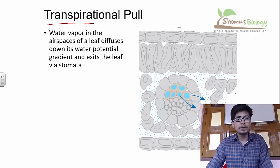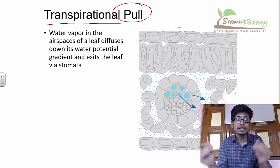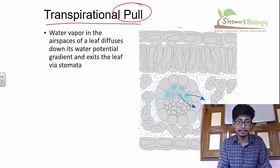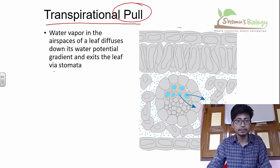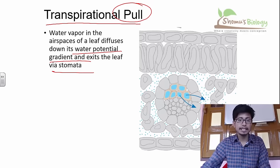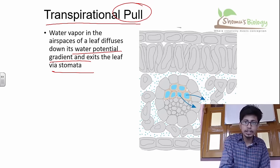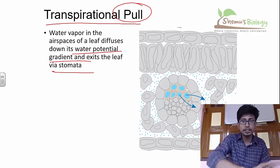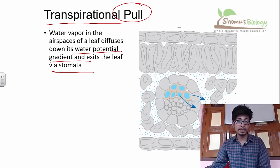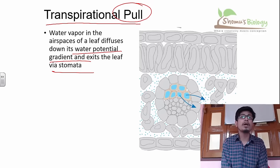We call it a transpirational pull. Water vapor in the air space of the leaves diffuses down its water potential gradient and exits the leaf via stomata. So the water potential gradient going down causes water to flow up. Due to transpiration, water is moved from the plant leaves, as a result a force builds up, and water starts coming from the soil towards the top of the plant through the xylem.